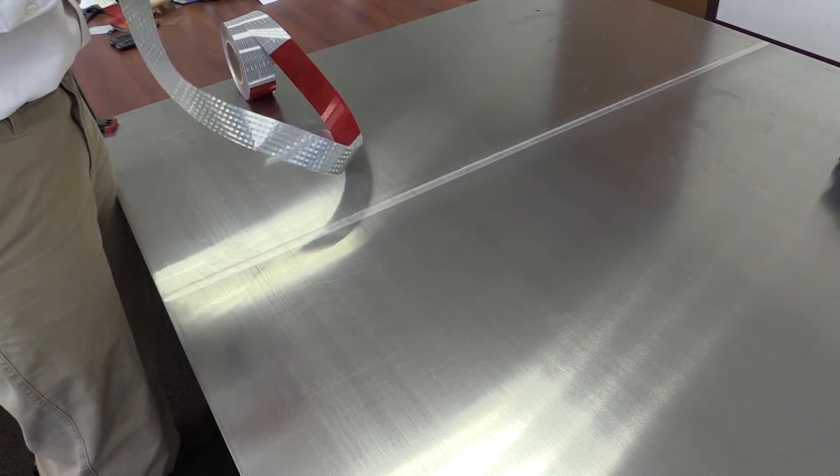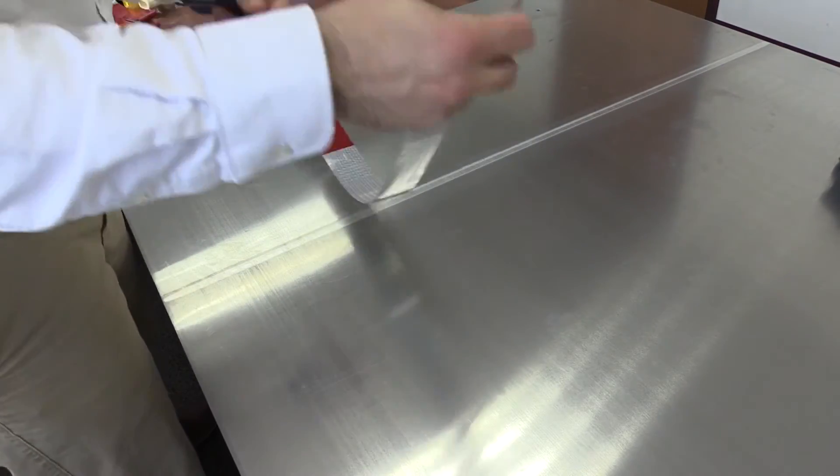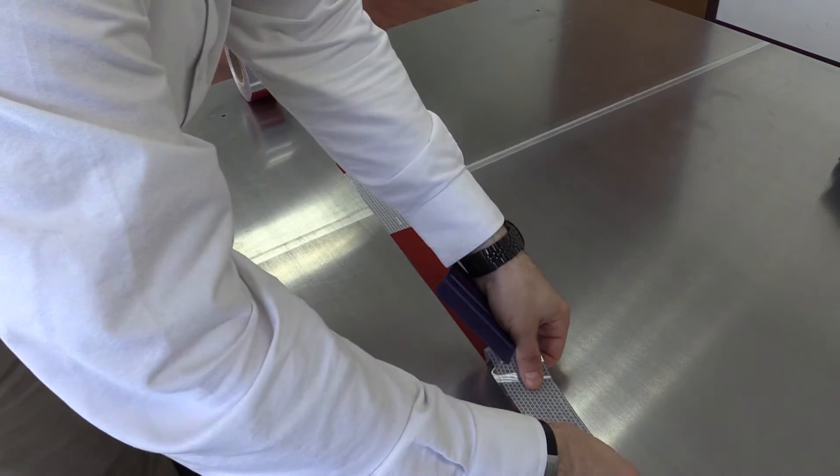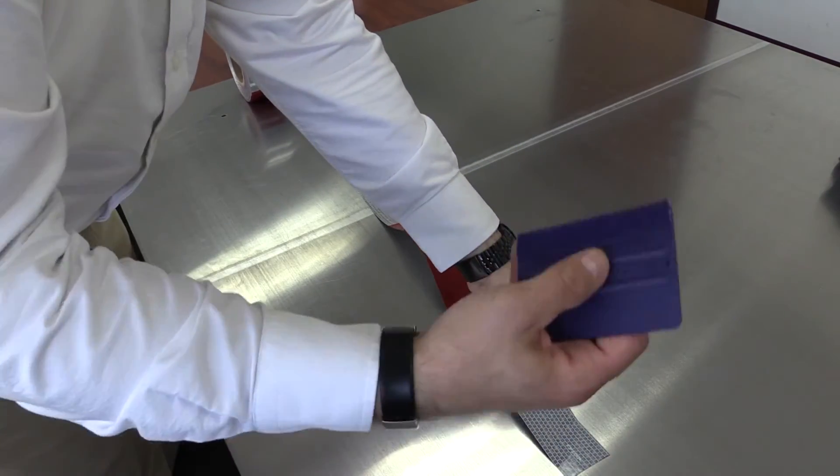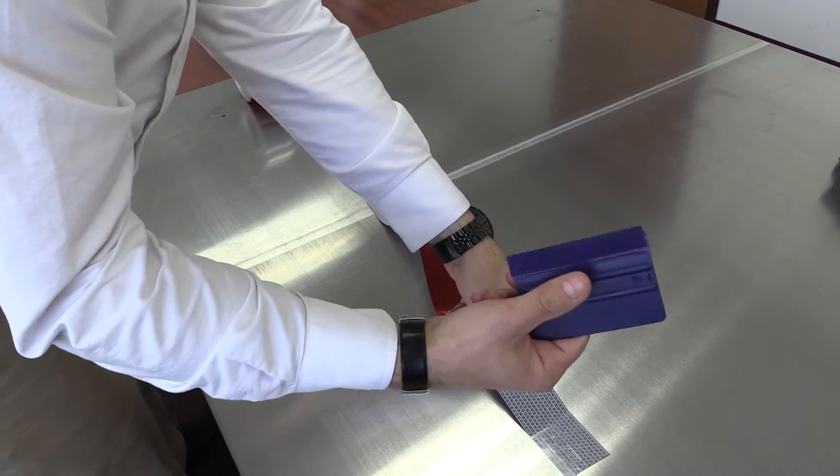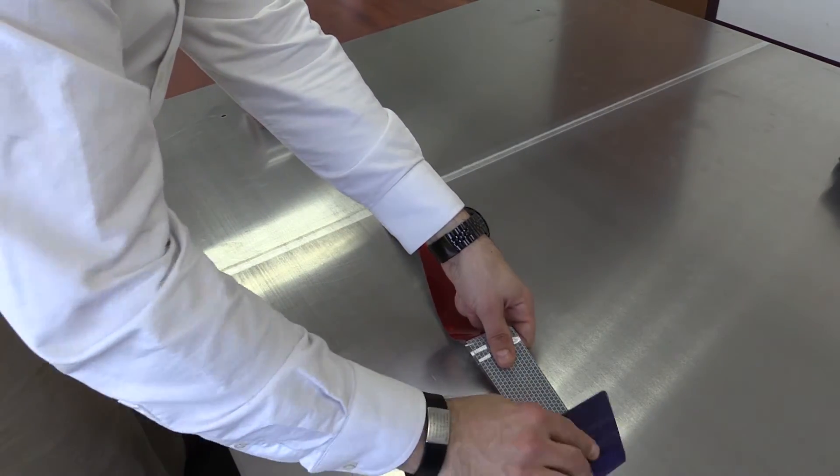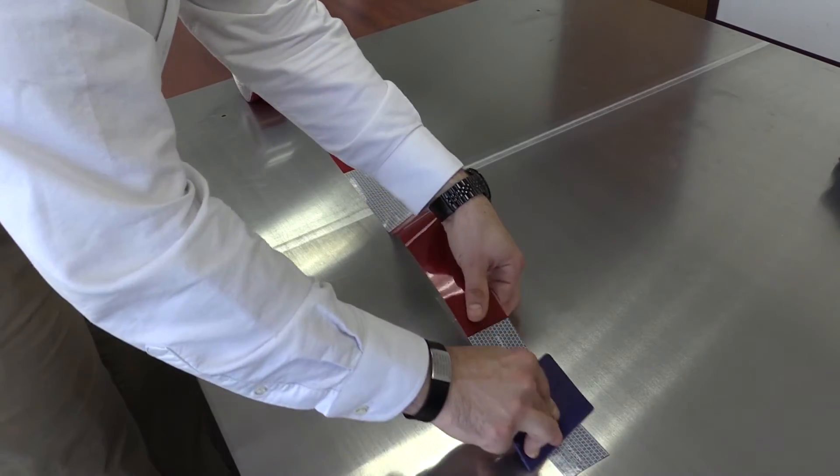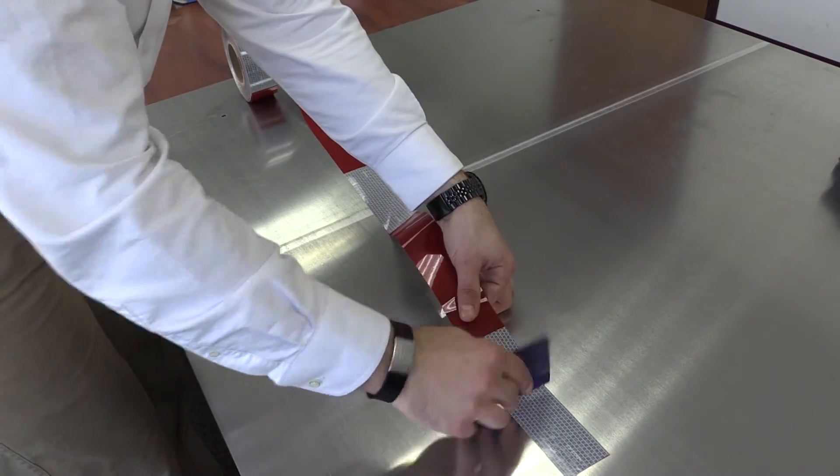Next we're going to walk through some tips during the application process itself. So I'm going to start my tape. And using my squeegee, you'll notice I'm using a squeegee with a felt edge. You can also use a low friction sleeve, but you never want to use a raw squeegee because it can scratch or mar the surface.